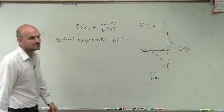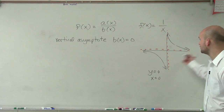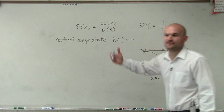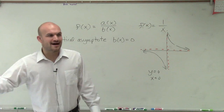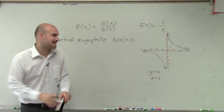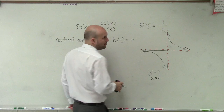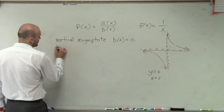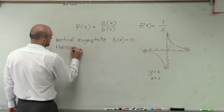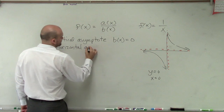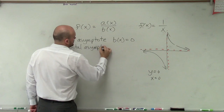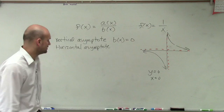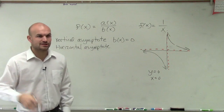Then what we also notice, ladies and gentlemen, is there is a horizontal asymptote. We have this horizontal one going at y equals 0. How do we figure out what that horizontal asymptote is? Well, there's a couple of rules, and you're going to want to write each one of these down. For our horizontal asymptote, there are three different ways that we can look at this, and what we're going to do is look at the degree.